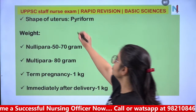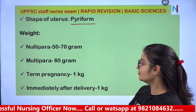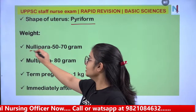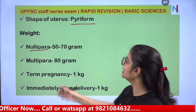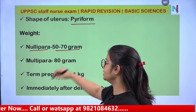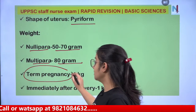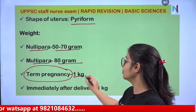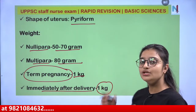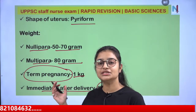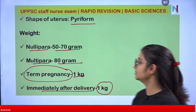The shape of the uterus is pyriform — pear-shaped. Weight of the uterus in a nullipara is 50–70 grams, in a multipara it is 80 grams. At term pregnancy the weight is 1 kg, and immediately after delivery it is also 1 kg.